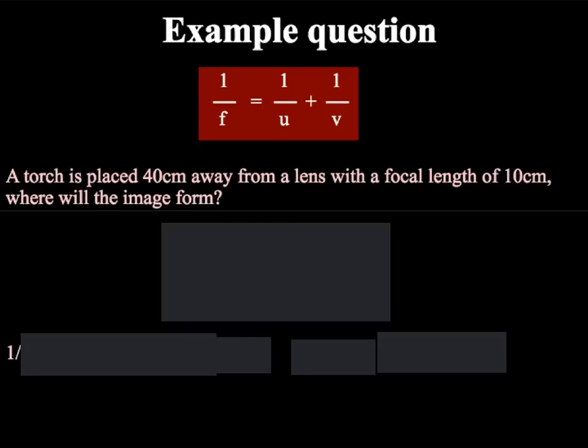An example exam question can be seen below. So a torch is placed 40 centimetres away from a lens with a focal length of 10 centimetres, where will the image form. In order to work out the answer to this question we must first work out what the question is asking us. So from the question we are told that the torch is placed 40 centimetres away from a lens. Because this is placed away from the lens, this is going to be looking at either the object or the image. Later on in the question it tells us that we're looking for the image formed, therefore this must equal the object length or u.